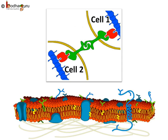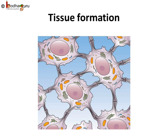Plasma membrane possesses specific substances at its surface which function as recognition centers and points of attachment. These points help in tissue formation, distinction of foreign substances, and defense against microbes.